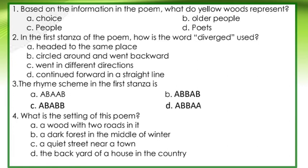Question 3: The rhyme scheme in the first stanza is A. ABAAB, B. ABBAB, C. ABABAB. Question 4: What is the setting of this poem? A. A wood with two roads in it. B. A dark forest in the middle of winter. C. A quiet street near a town. D. The backyard of a house in the country.